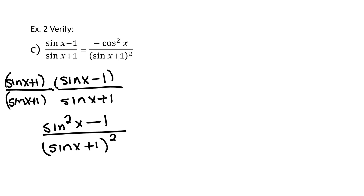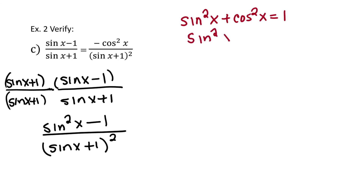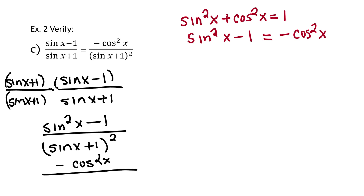The denominator now looks just like the expression on the right-hand side; the numerator does not. We'll work with the Pythagorean theorem: sine squared x plus cosine squared x equals 1. I need a negative cosine squared x, so let's subtract 1 from both sides, giving sine squared x minus 1, then subtract cosine squared x from both sides, which gives negative cosine squared x. So sine squared x minus 1 equals negative cosine squared x.